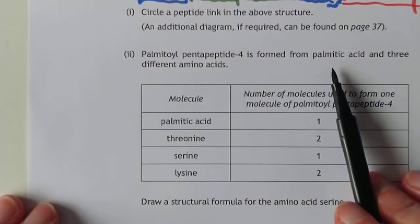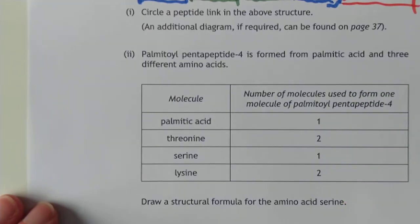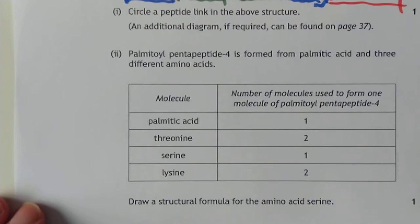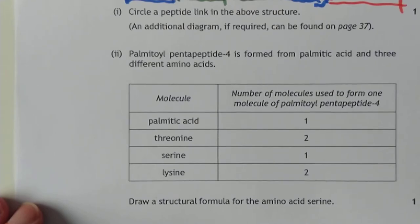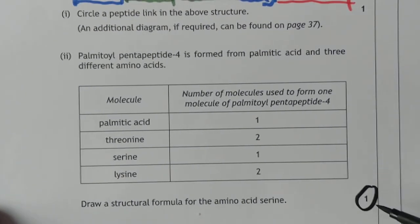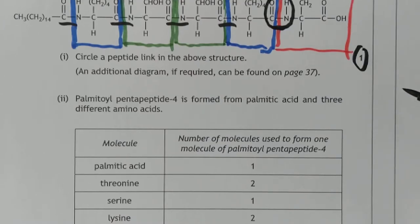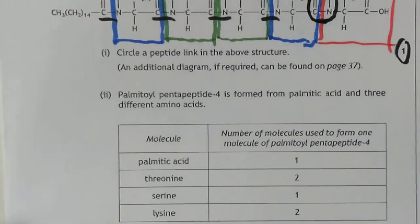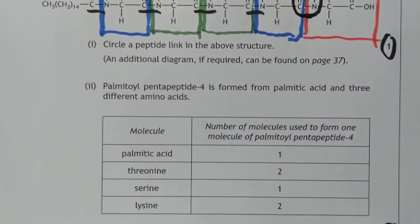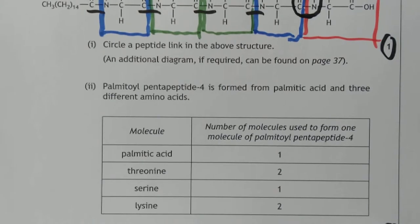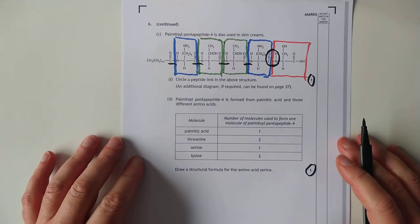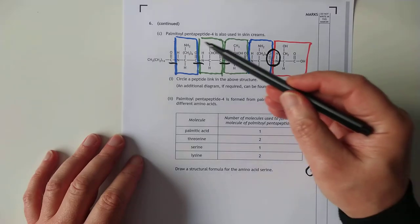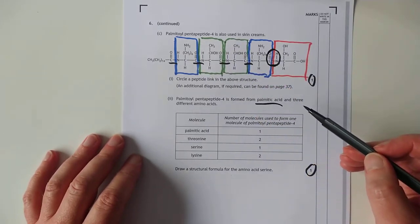And then it goes on to say Palmitoyl pentapeptide 4 is formed from palmitic acid and three different amino acids. And down here, this is a problem-solving question, by the way, for one mark. It's a nice example of why in exam technique you might want to balance your time. I mean, look at this. If you start to read on this and you're thinking, what's going on here? It's worth a single mark. Whereas this, that was also worth a single mark, took you all of five seconds to do. So it's entirely an exam technique thing here, guys. You might want to do the simple stuff first and then work on the complex problem-solvings later on.